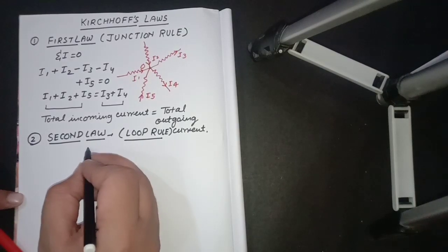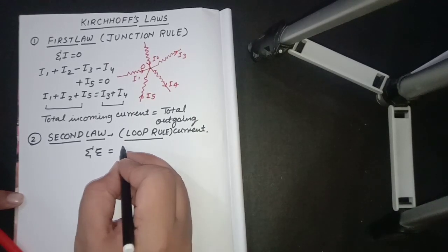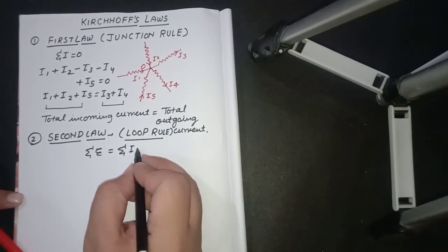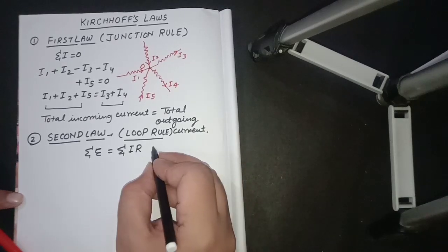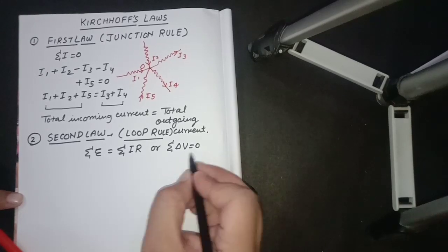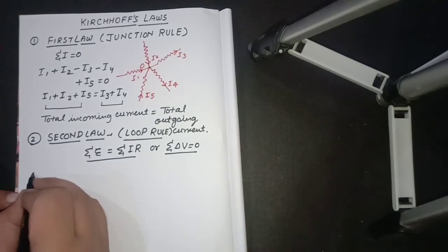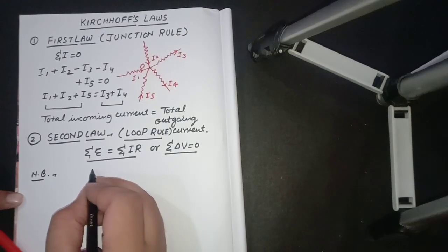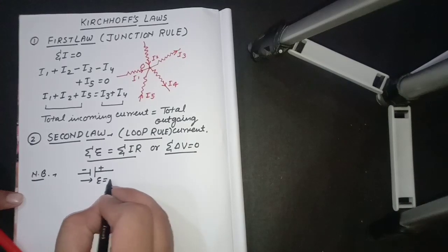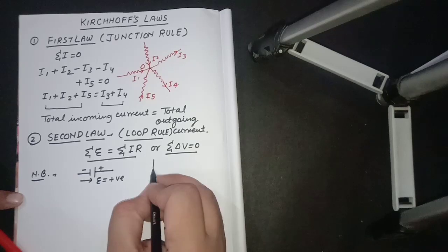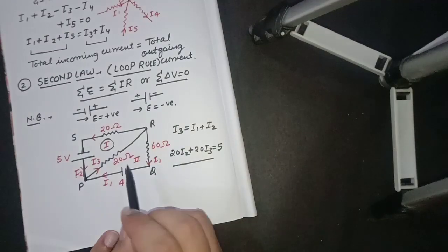The loop rule says that the algebraic sum of the EMFs in any loop of a circuit is equal to the sum of the products of currents and resistances in it. So we can write it as sigma EMF equals sigma IR, or another way to represent it is sigma delta V equals zero. Both are statements for the loop rule. One notable thing: the direction of EMF will be taken as positive if in a circuit we are going from negative to positive terminal, and negative if we are going from positive to negative.